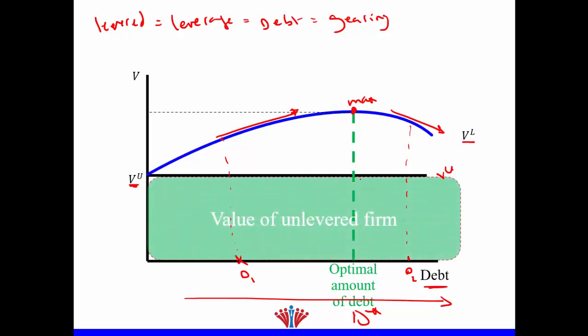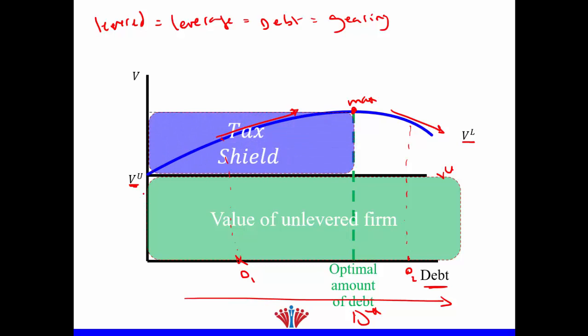The horizontal baseline represents the value of the unlevered firm. The levered value increases because of the impact of the tax shield. Tax shield means that every time we use debt we pay lower taxes, so we benefit from paying less taxes. However, if we keep increasing debt, it increases our financial risk and consequently increases the probability of financial distress, which is why the value of the levered firm starts to decrease.